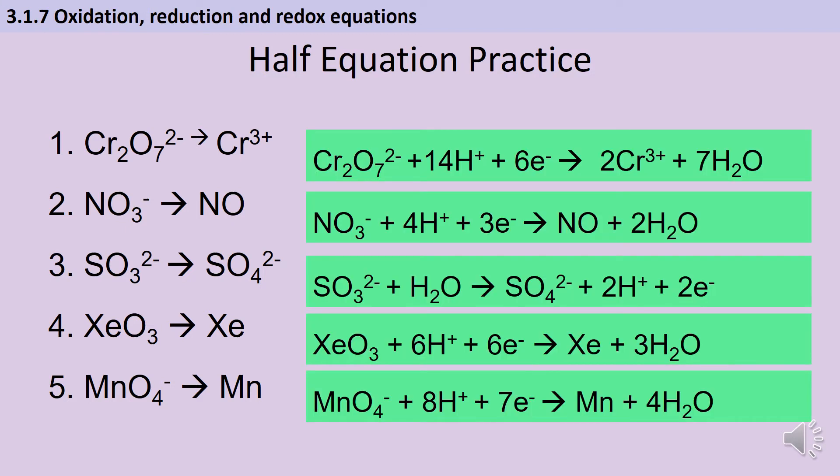In question one we've got two atoms of chromium six being reduced to chromium three which requires six electrons and then seven water molecules to deal with the seven oxygen atoms on the left and 14 hydrogen ions to make that all balance.